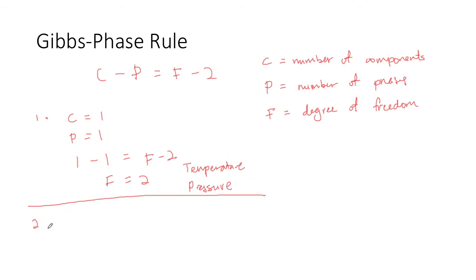Let's examine a second scenario where there are two phases but only one component or a pure substance. So C would still be 1 because one component, P equals 2 because two phases.